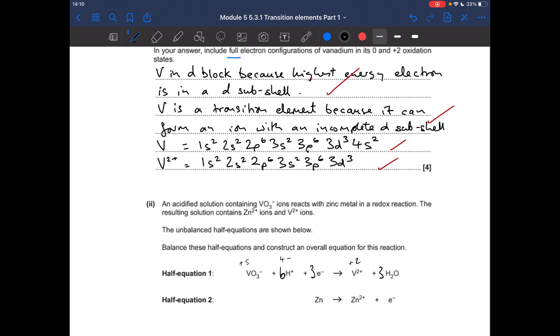Half equation 2, really straightforward. We're going from Zn, which is in its zero oxidation state, to plus 2. So that's an increase of 2 in oxidation number, so it's lost 2 electrons. To combine the two, we need to get the electrons to cancel out. If we multiply this one by 2, multiply this one by 3, that'll give us 6 electrons in each half equation.